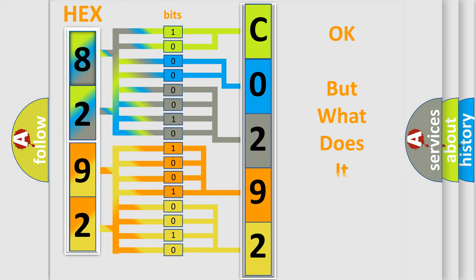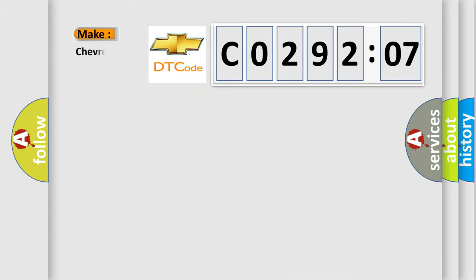The number itself does not make sense to us if we cannot assign information about what it actually expresses. So, what does the diagnostic trouble code CO29207 specifically interpret for Chevrolet car manufacturers?